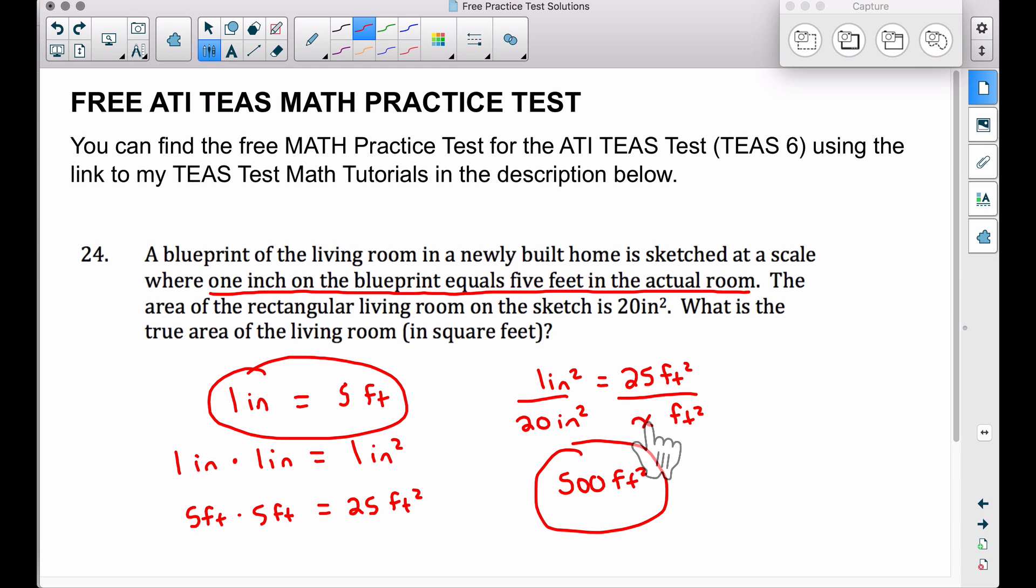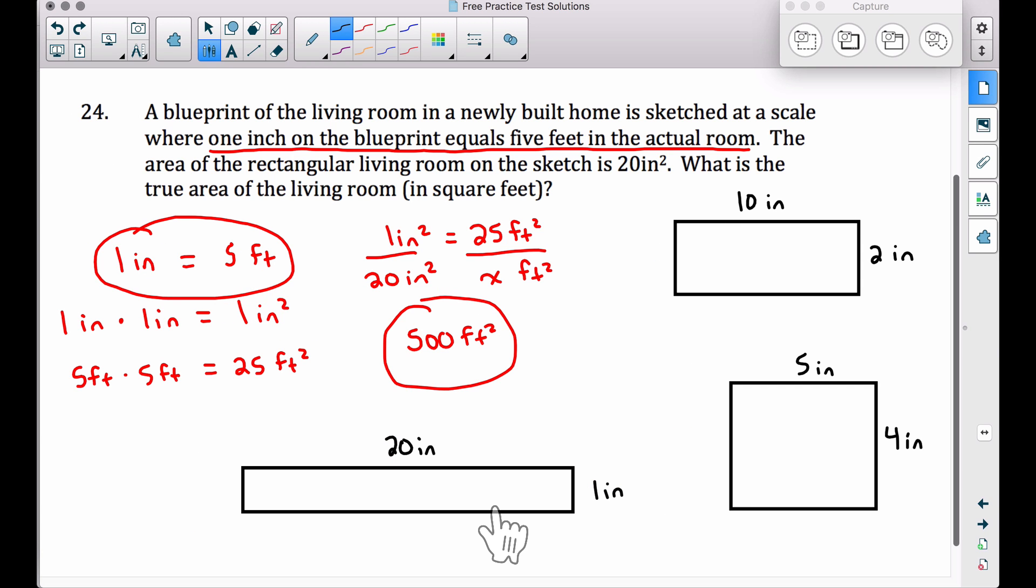Now let me show you another way to approach this problem. Now I have three rectangles drawn here, and these are rectangles that we may see on this blueprint. But what I want you to notice about each one of these rectangles, again they're not drawn to scale, but the area of this rectangle, 10 times 2, is 20 square inches.